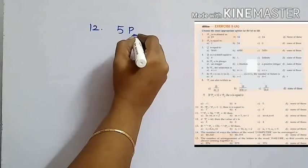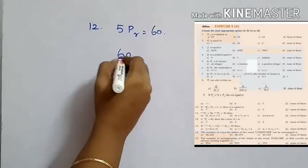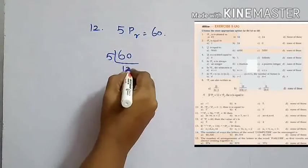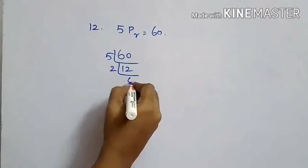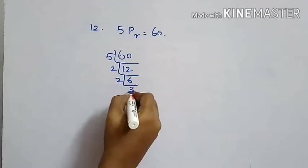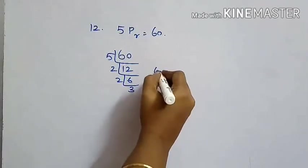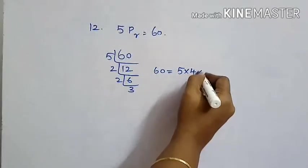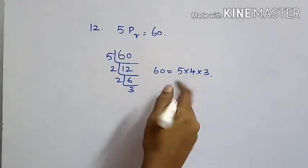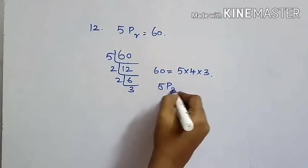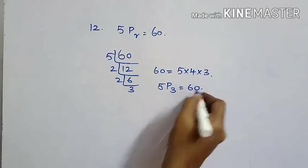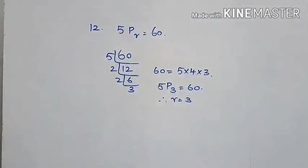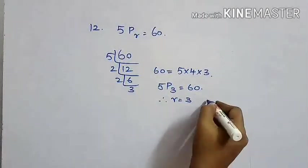12th question: 5PR = 60. Factorizing 60, we get 5 × 4 × 3, which can also be written as 5P3. So the value of R is 3. The correct option is A.